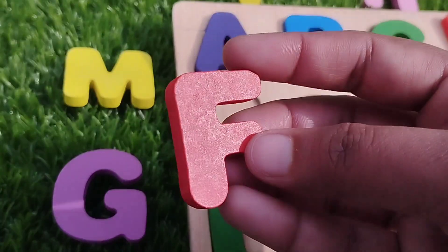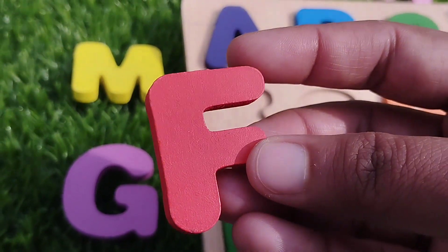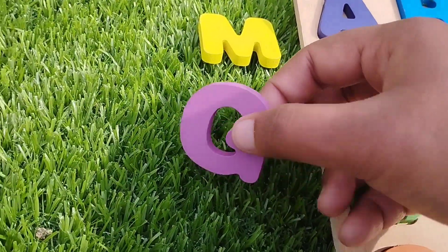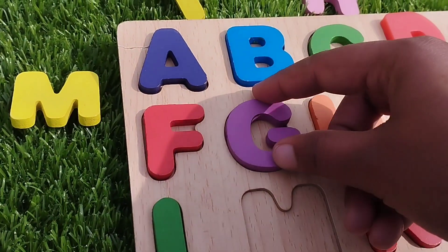The next letter is letter F. F for fish. The next letter is G. G for goat.